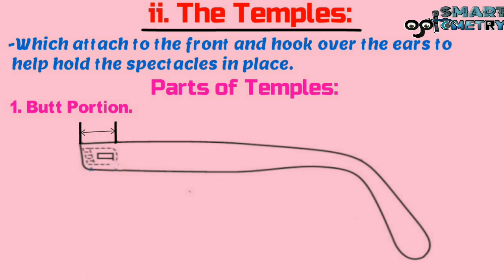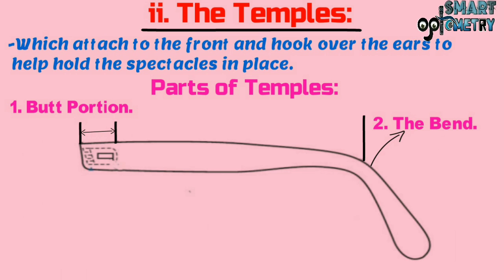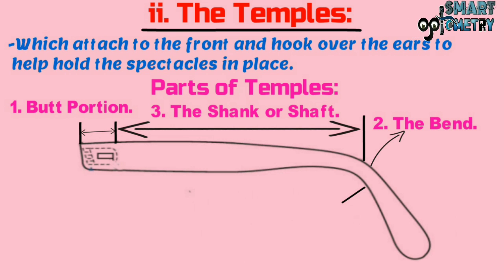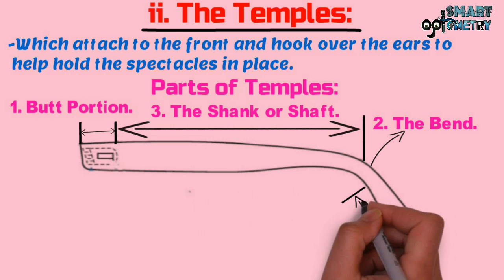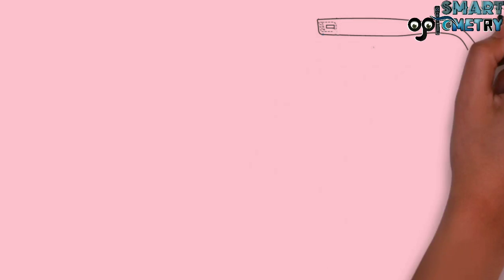One, butt portion. Two, the bend. Three, the shank or shaft. Four, earpiece. Now let's discuss details about the parts of the temples.